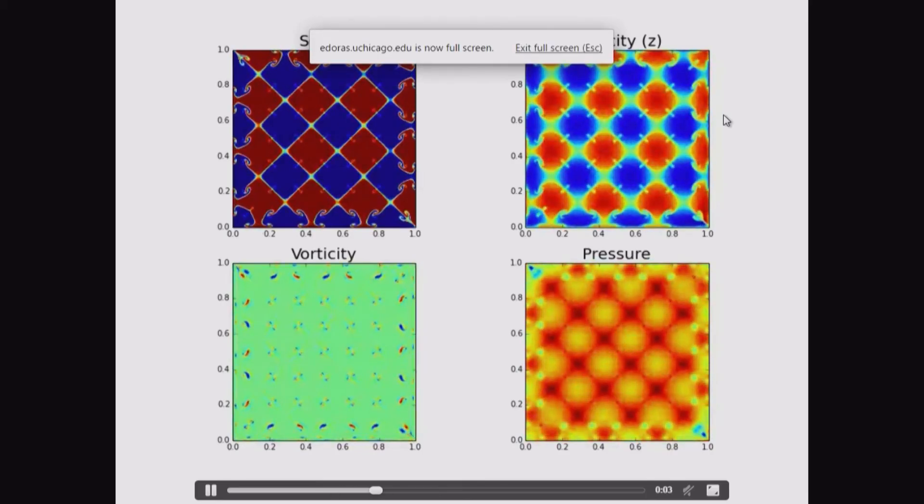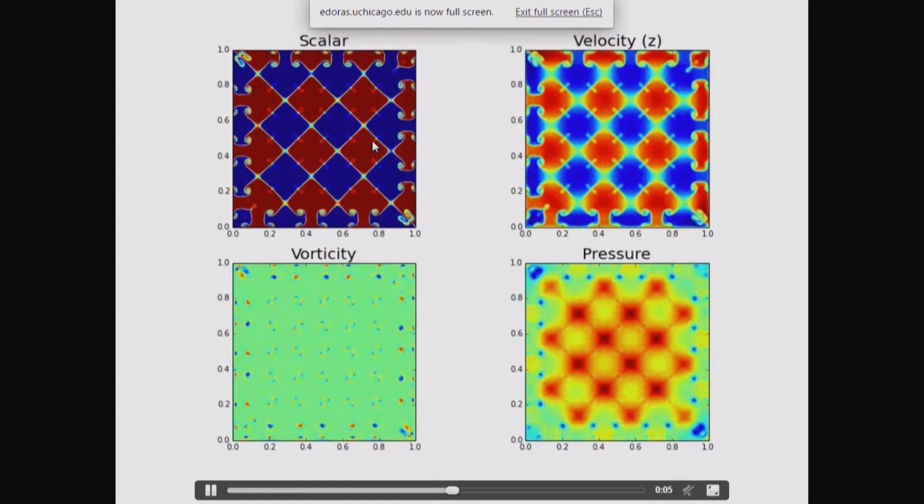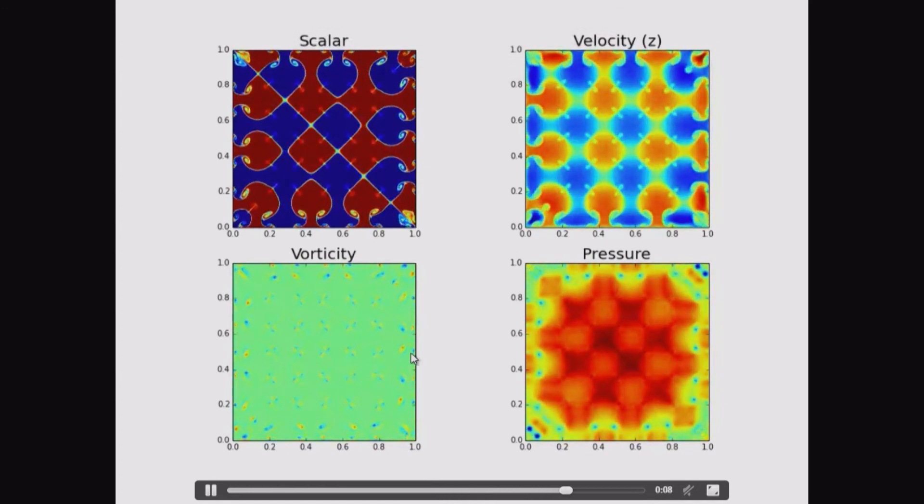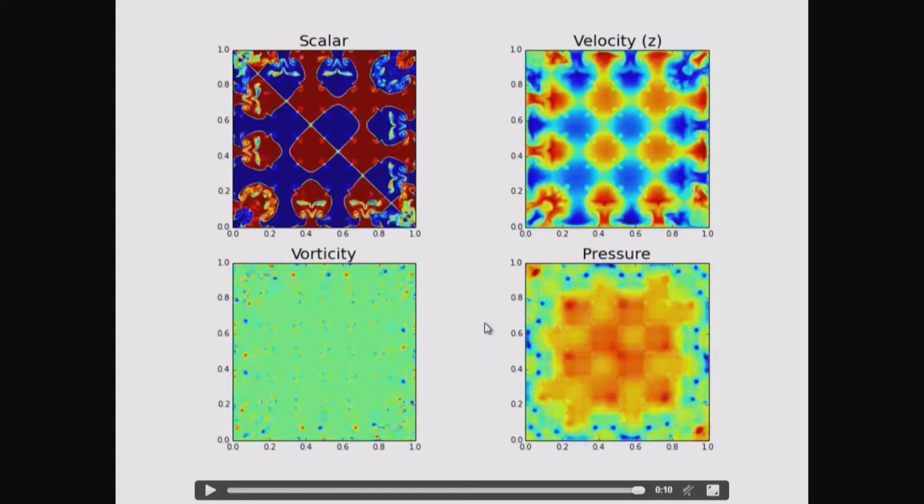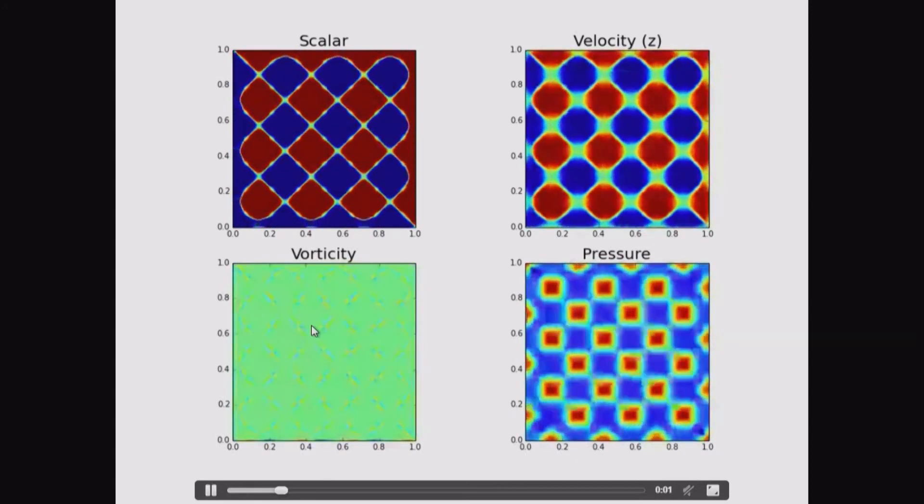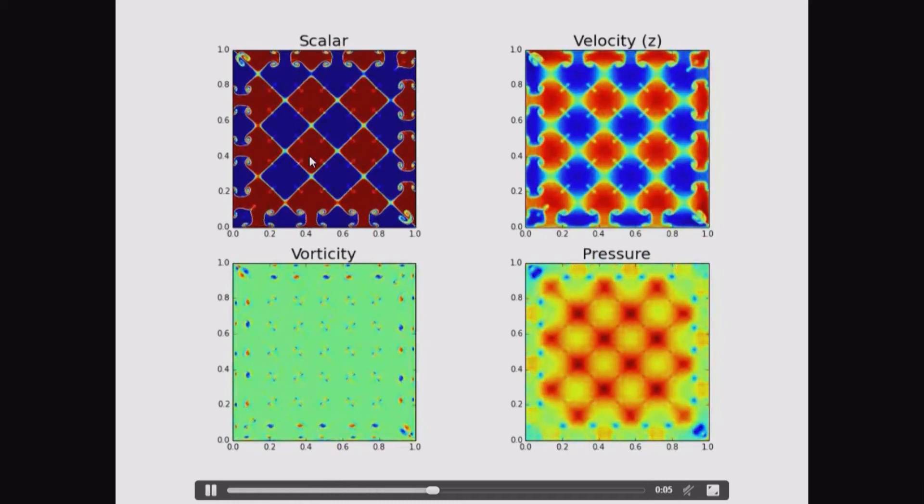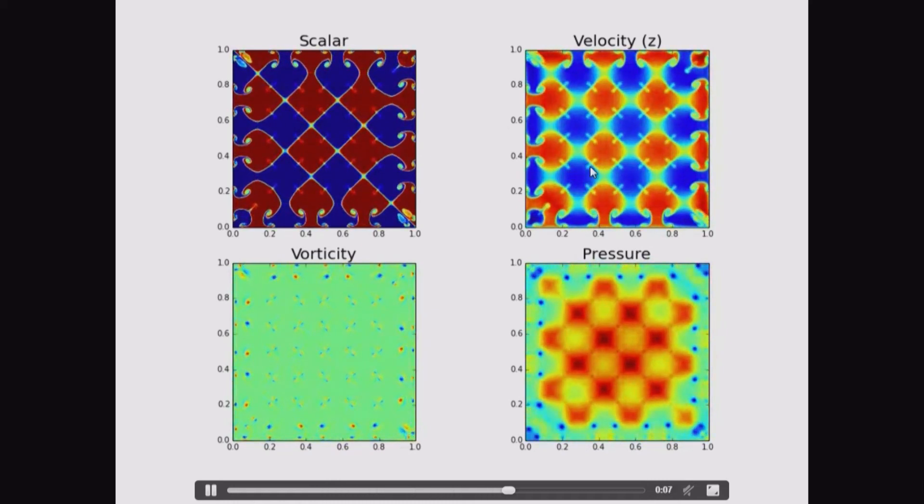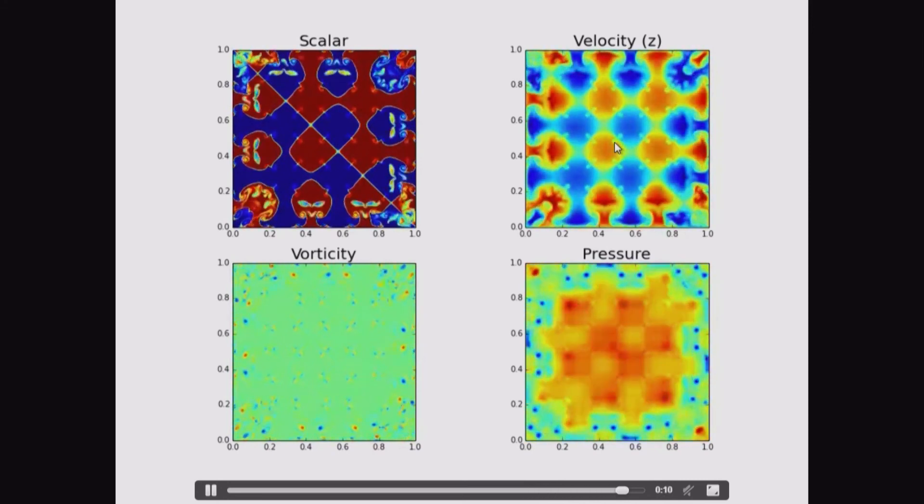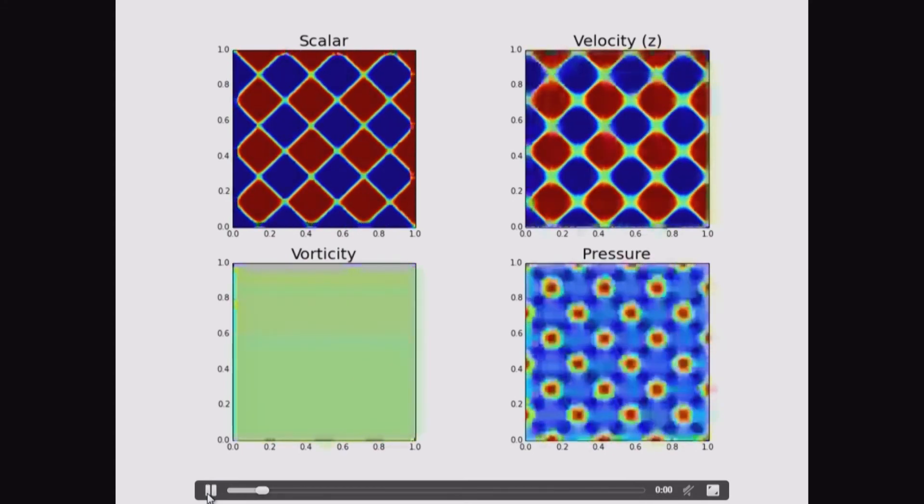So the thing that I want to point out here, again we have the scalar, we have the z component of the velocity, we have the vorticity, we have the pressure. You can see in both the scalar and in the z component of the velocity, there's some sort of flow which penetrates into the center of the rising bubbles in the falling spikes, which causes these little stitching patterns in the z component of the velocity.